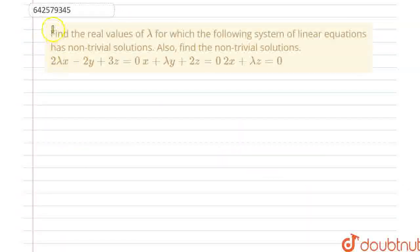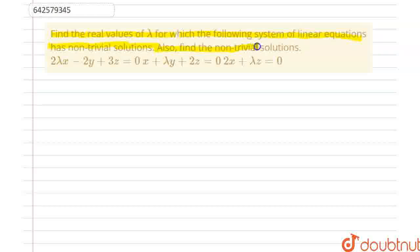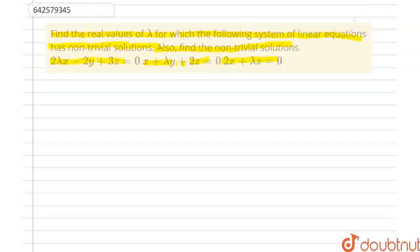The question says: find the real values of lambda for which the following system of linear equations has non-trivial solutions. Also find the non-trivial solutions. The equations are: 2λx − 2y + 3z = 0, x + λy + 2z = 0, and 2x + λz = 0.